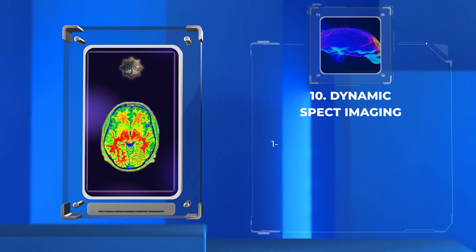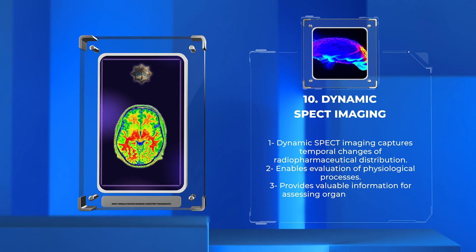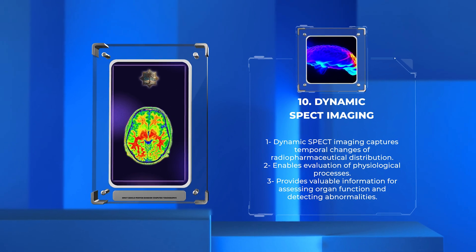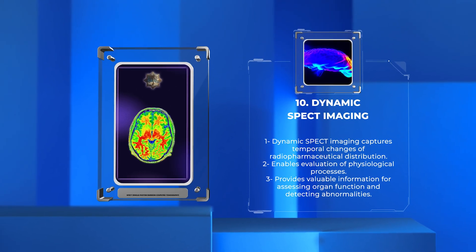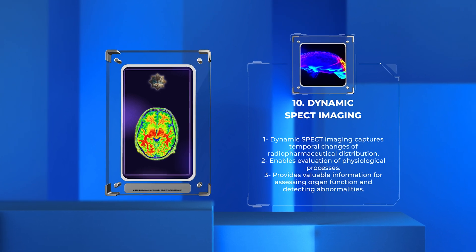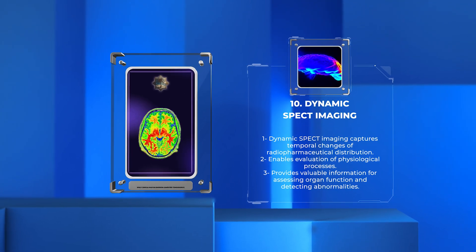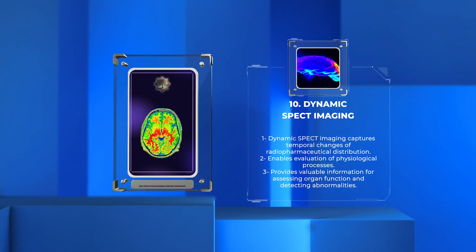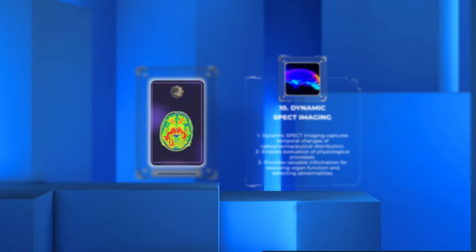Dynamic SPECT imaging captures the temporal changes of radiopharmaceutical distribution within the body. It enables the evaluation of physiological processes such as blood perfusion, tracer uptake kinetics, and receptor binding. Dynamic SPECT imaging can provide valuable information for assessing organ function and detecting subtle abnormalities.